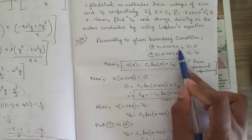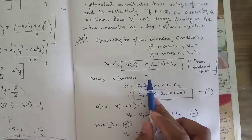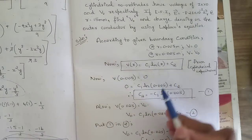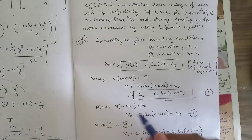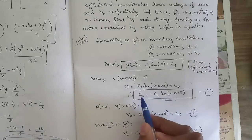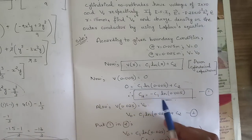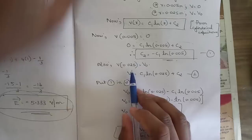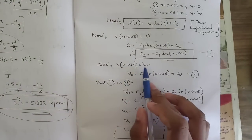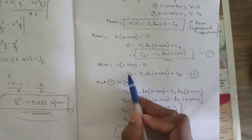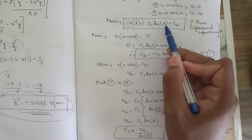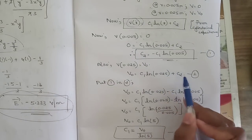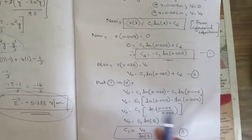Substituting the first condition: 0 = C₁ ln(0.005) + C₂, so C₂ = -C₁ ln(0.005) — call this Equation 1. Applying the second condition: V(0.025) = V₀, giving V₀ = C₁ ln(0.025) + C₂ — call this Equation 2.